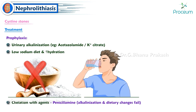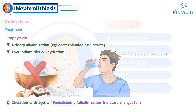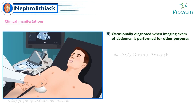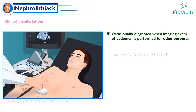Prophylactic treatment for cystine stones includes urinary alkalization (e.g., with acetazolamide or potassium citrate), a low-sodium diet, and increased hydration. Chelation with agents such as penicillamine is used if alkalization and dietary changes fail.